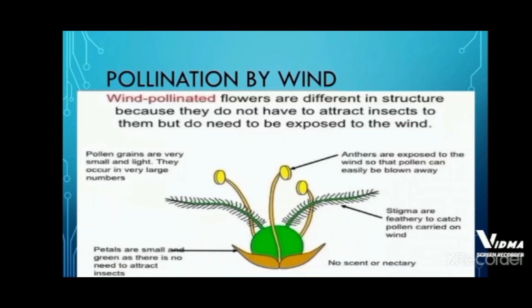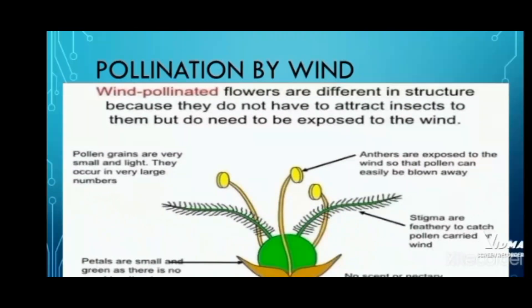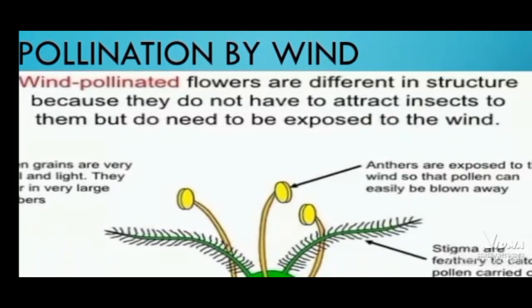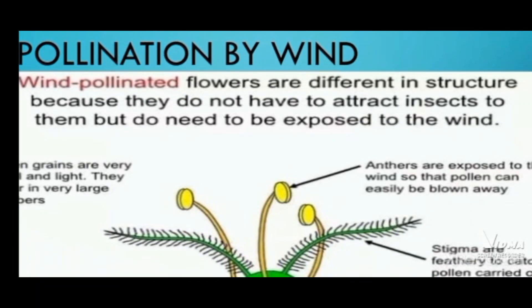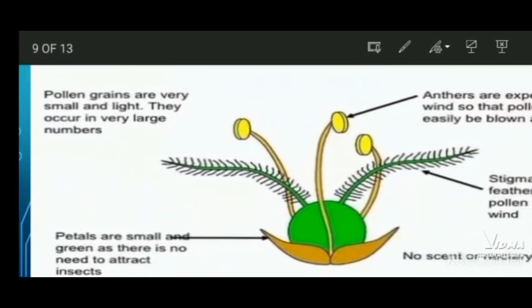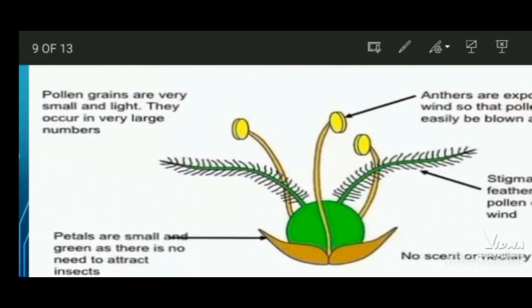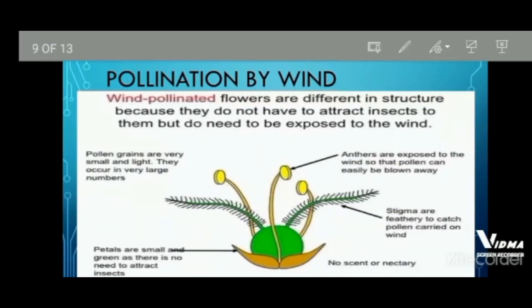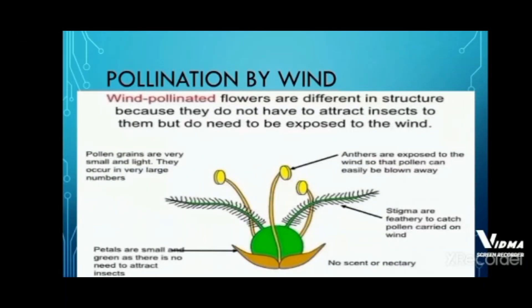Now we will talk about pollination by wind. How does wind pollination take place? The pollen grains which are pollinated by wind are very light, so they can easily pass from one flower to another. The petals of these types of flowers are not very attractive because they don't need to attract insects. These flowers also do not contain any nectar.